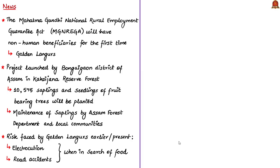For the first time since the Mahatma Gandhi National Rural Employment Guarantee Act, popularly called MGNREGA, became law in 2005, this act will have a non-human beneficiary. The non-human beneficiaries are the rare golden langurs found in a reserve forest in Bongaigaon district in Western Assam. The district authorities have launched a 27.24 lakh project under MGNREGA, under which around 10,575 saplings and seedlings of fruit-bearing trees such as guava, mango and blackberry will be planted. The Assam forest department and local communities will maintain the saplings.